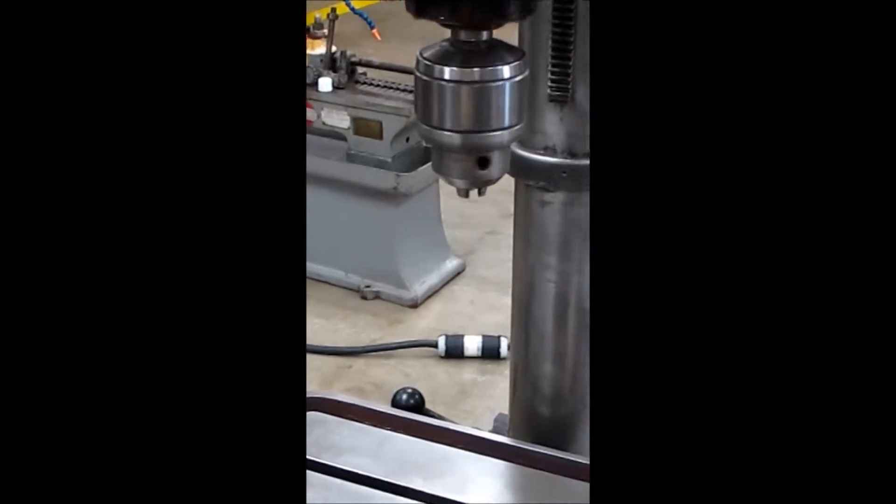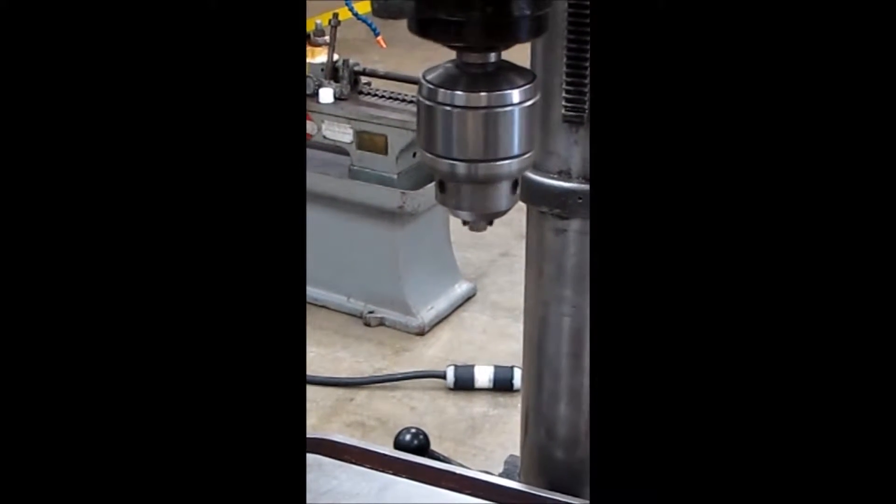Right now we have a Jacobs 1 1⁄8 inch to 5 1⁄8 inch drill chuck on it. It's got a number 3 Morse taper.